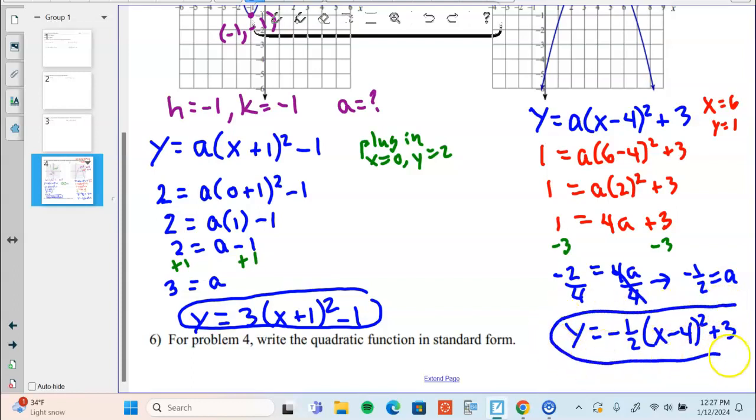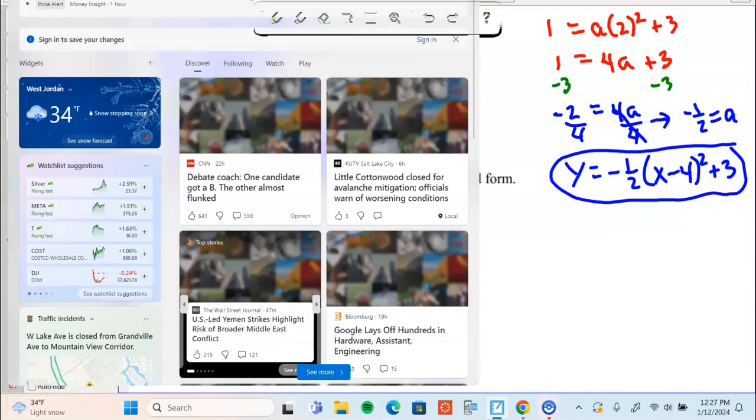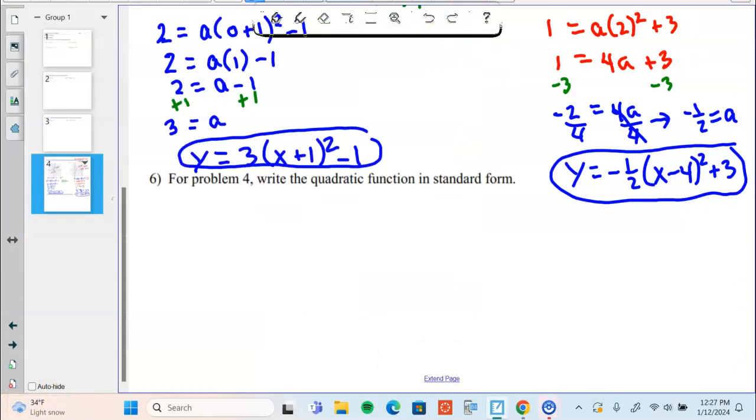Now we have one last question that I want to make sure everybody knows how to do. For problem number four, write the quadratic function in standard form. Okay, remember standard form is y equals ax squared plus bx plus c.